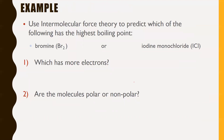Another example: use intermolecular force theory to predict which has the higher boiling point — bromine (Br₂) or iodine monochloride (ICl). If you count the electrons on each, two bromines together coincidentally has the same number of electrons as iodine plus chlorine — they both have 70 electrons. So the London dispersion forces are equal, and this comes down to polarity.